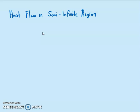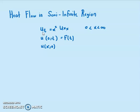Hi everyone. Today we're going to look at how to solve a PDE on a semi-infinite region. This is my semi-infinite region, where there's one boundary condition given here — f(t) — which is for when x equals 0. When x approaches infinity, the solution is bounded by 0. We also have an initial condition, which is given as this.